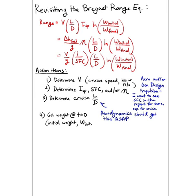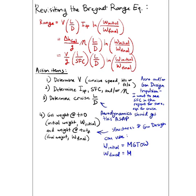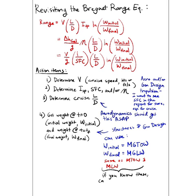And then also get the initial weight and the final weight. That's kind of equivalent to the MG Tau and then the MGLW. And now I hope you know how to get your range and how it all comes together.